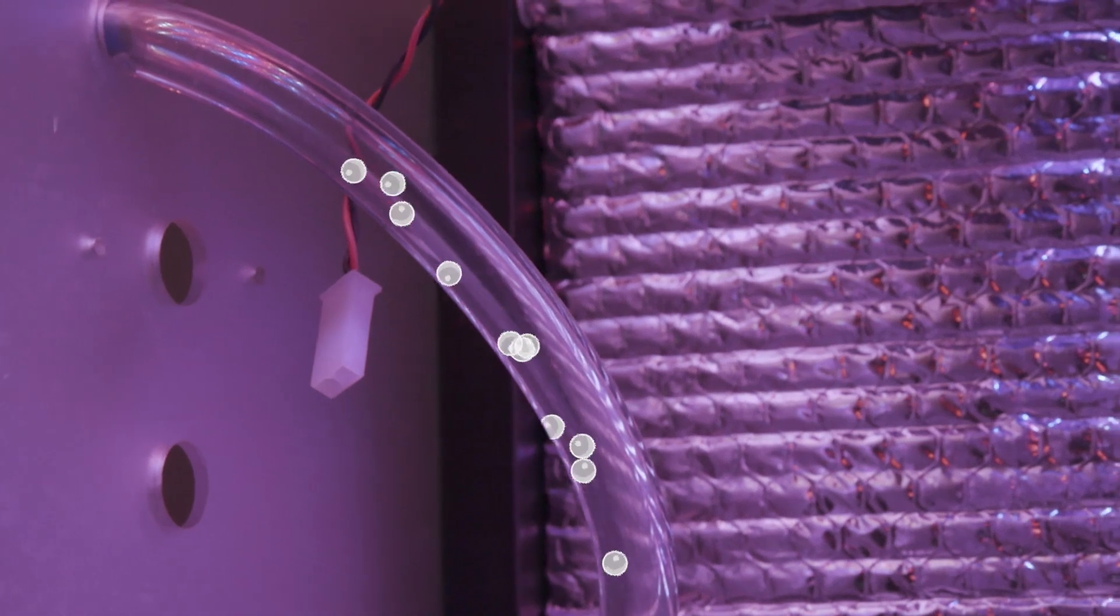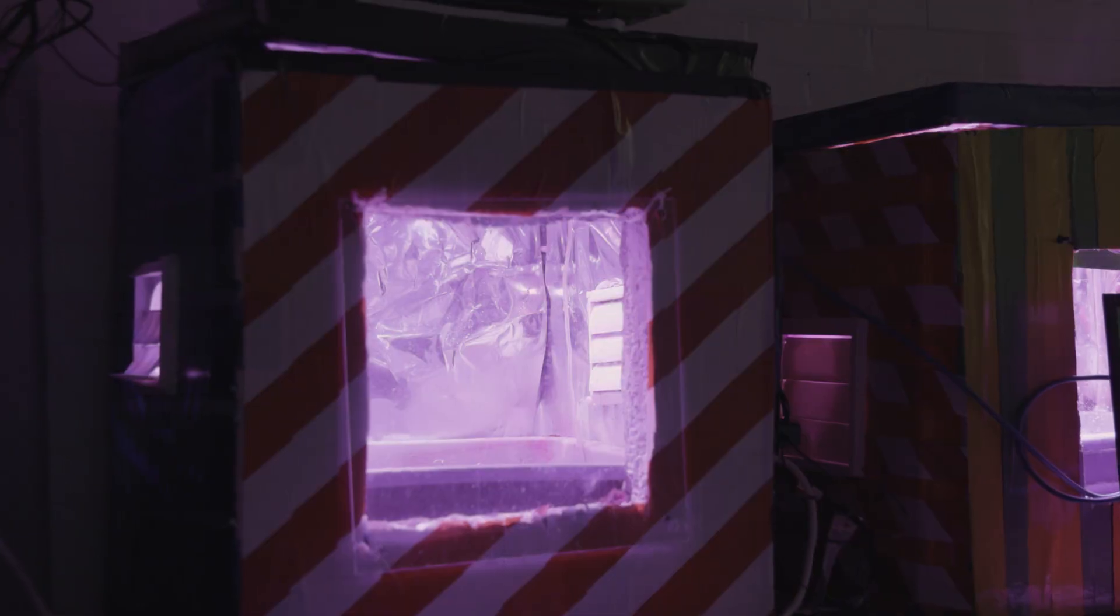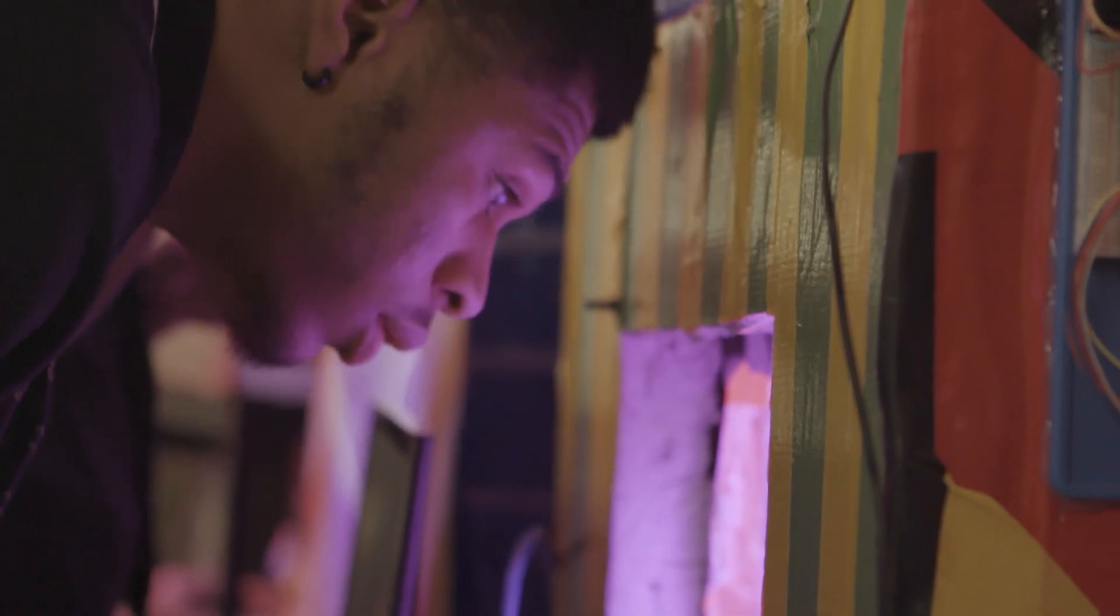We also have an air bubbler inside the hydroponics so that the roots can get oxygen. On the front we have an acrylic board so you can see what's growing inside.